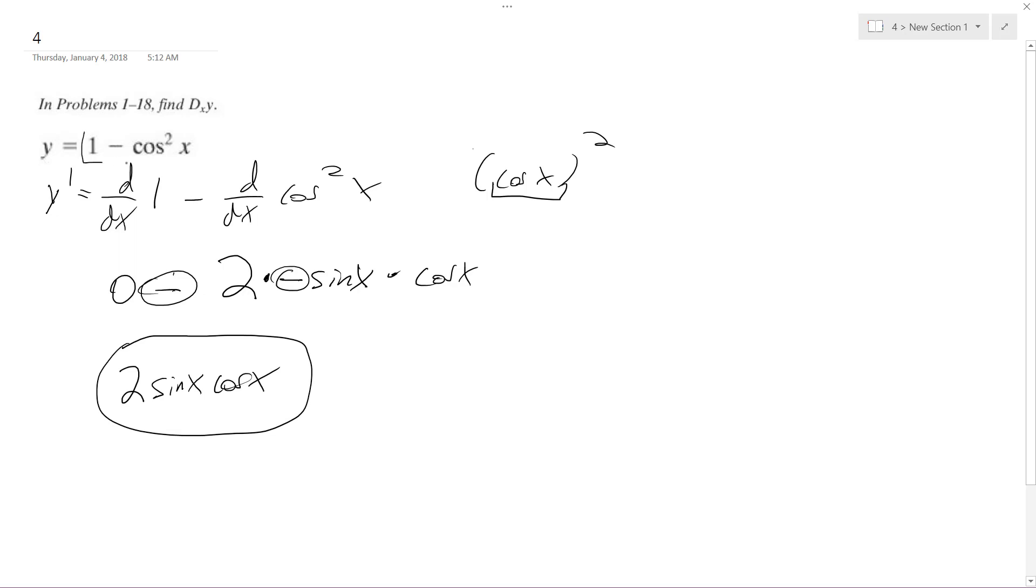The other thing you could do is you could have taken the derivative of the trig identity. This is the same thing as sine squared x. And if you do the chain rule on that, you should end up with the same thing.